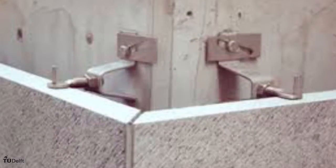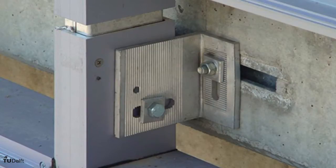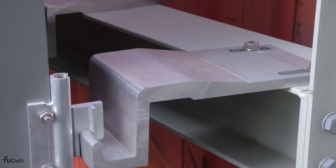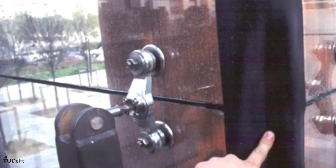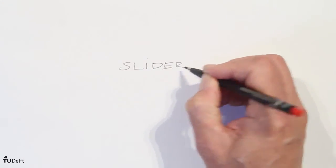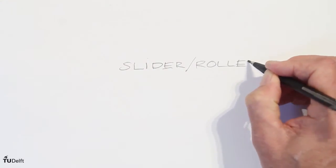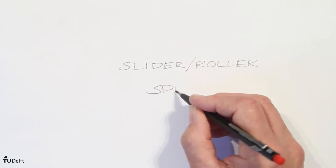Numerous different anchors have been designed and developed, as well as part of a proprietary system, or as a special design for a specific building or situation. In general there are two methods to make anchors that allow translation: the slider or roller on one hand and the spring on the other.